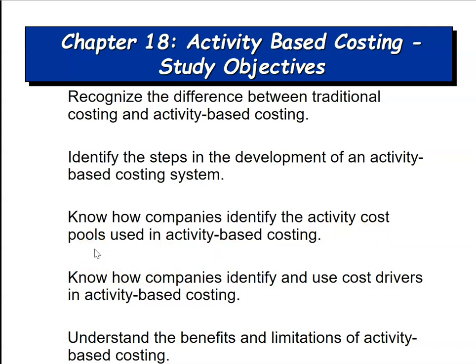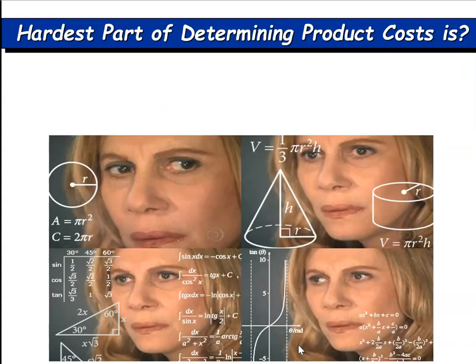We actually do know what cost drivers are. We may have referred to them in the past as activity levels. In our typical formula for predetermined overhead, manufacturing overhead is divided by some type of activity level as the denominator — that activity level is a cost driver. So we're more familiar with this concept than we might think. Finally, there are benefits to activity-based costing, otherwise we wouldn't do it, but there are also some limitations as well.